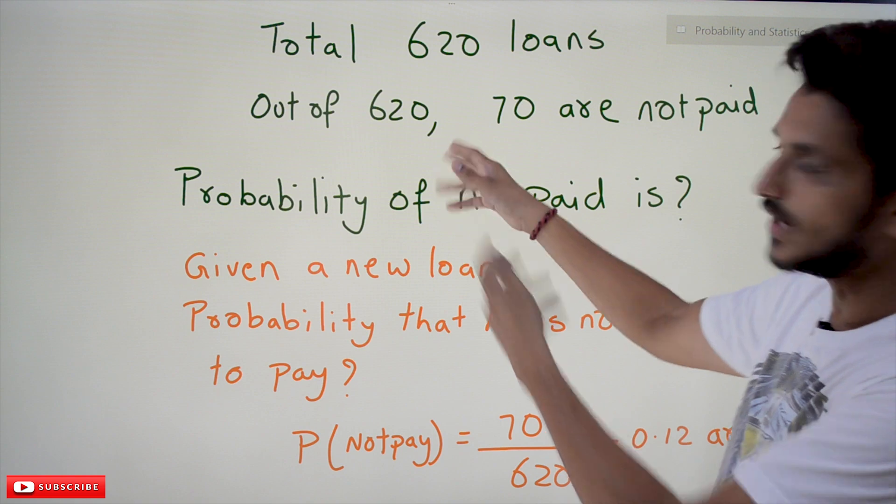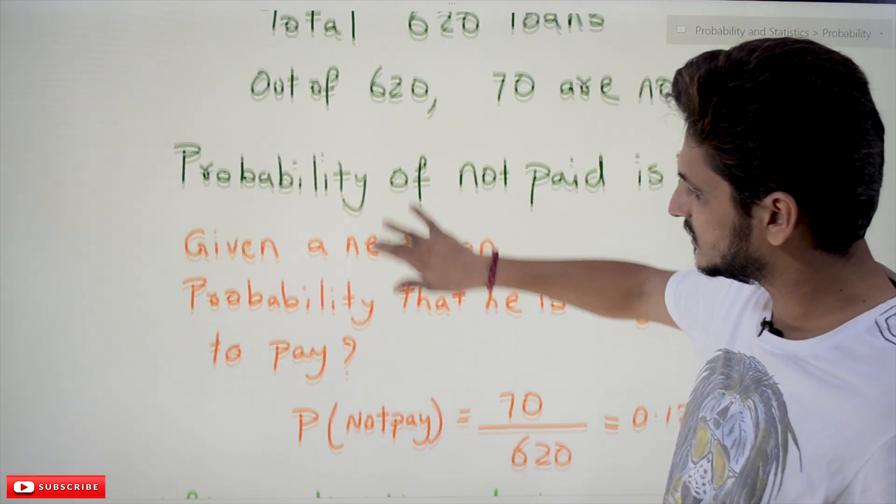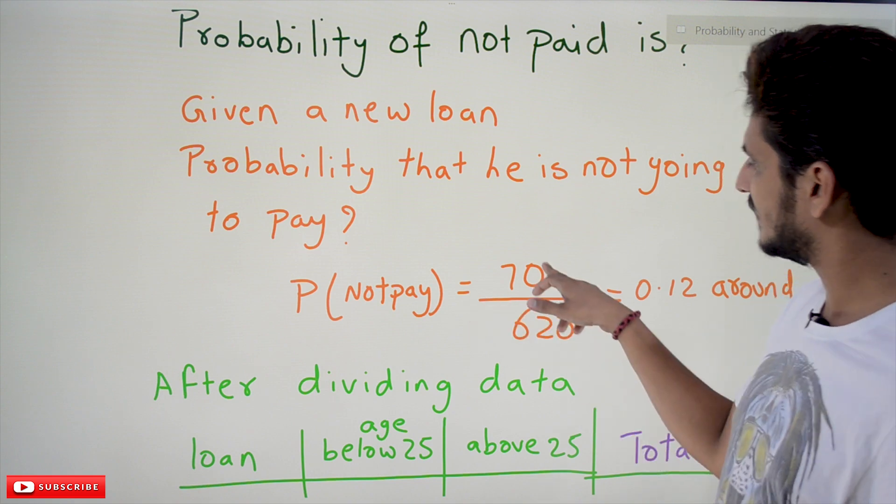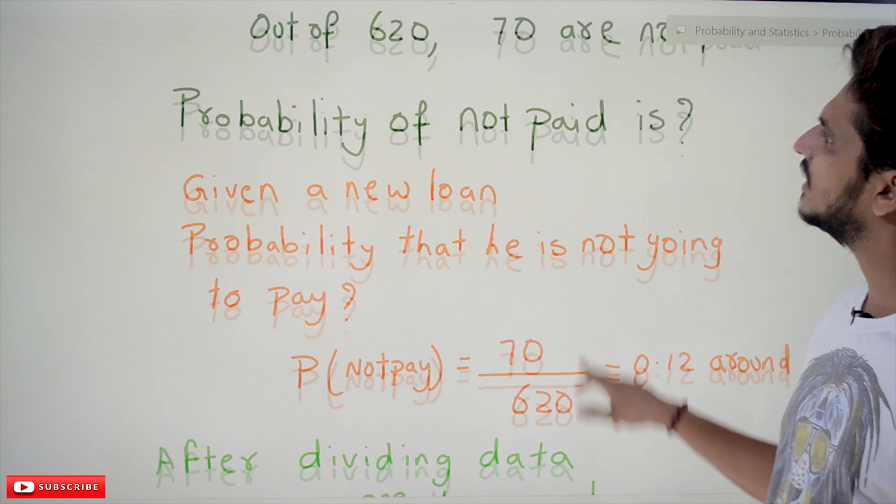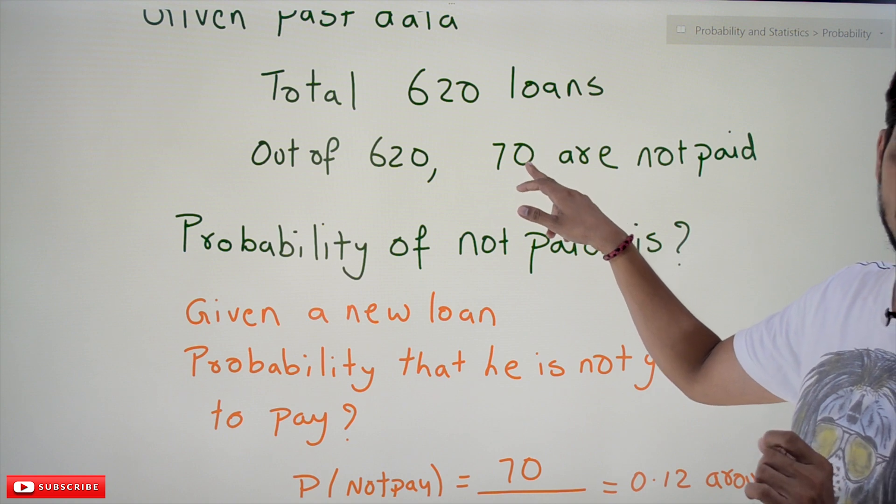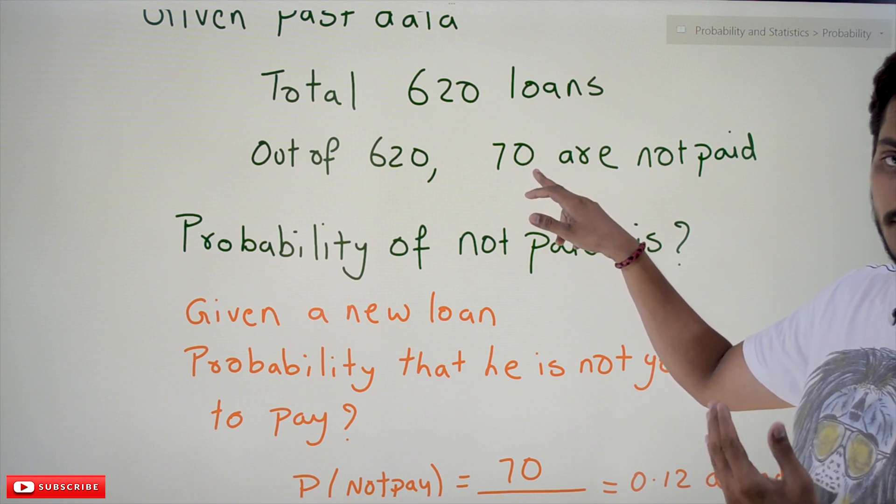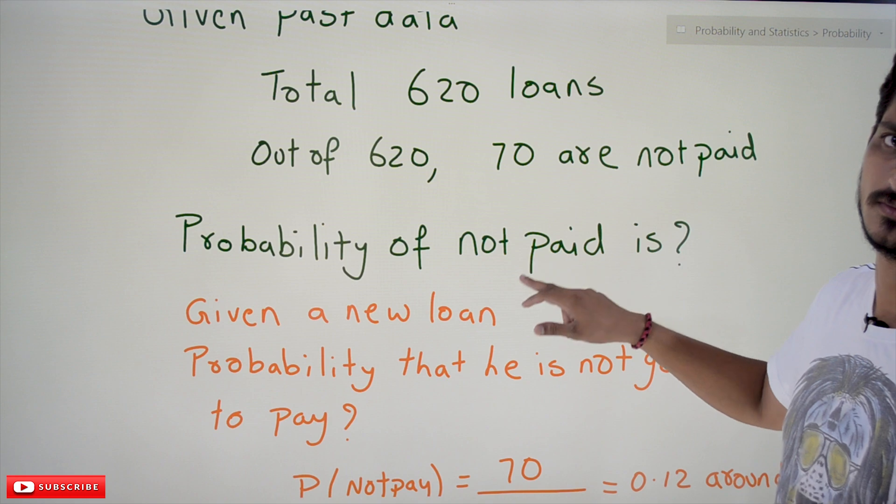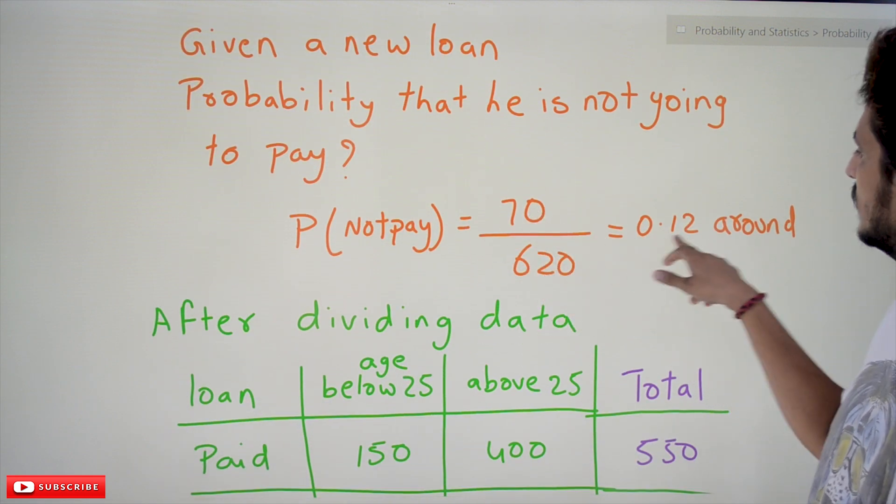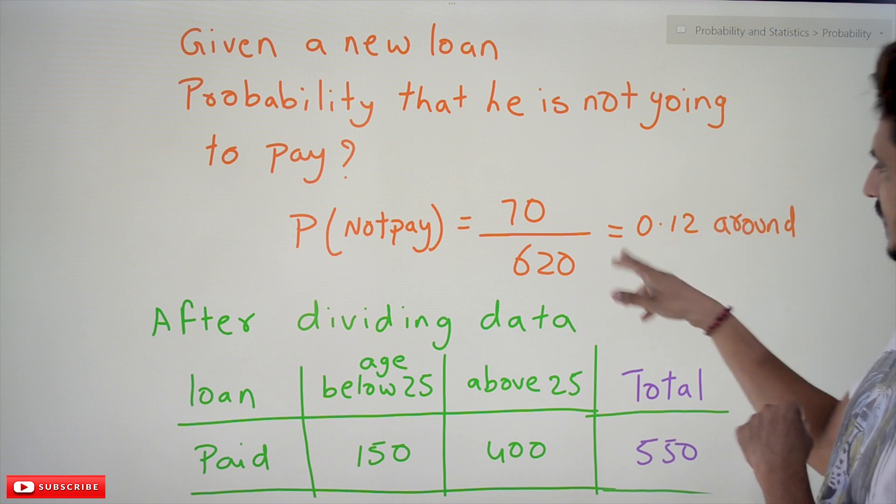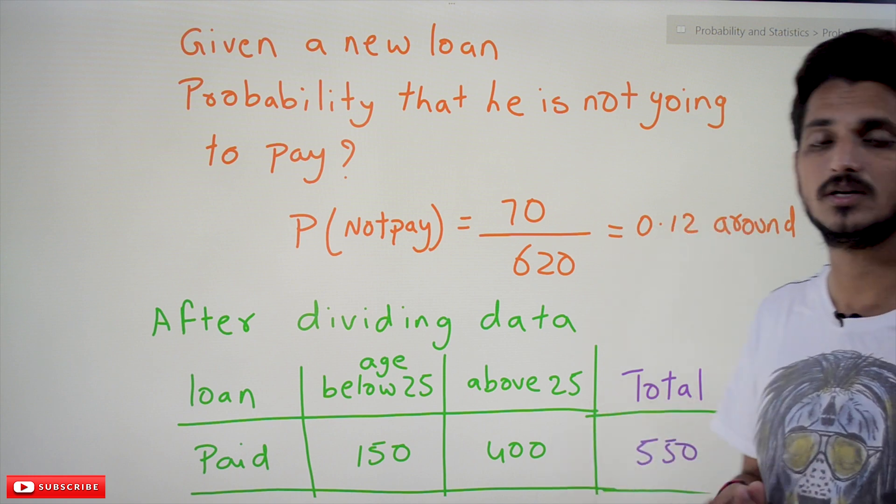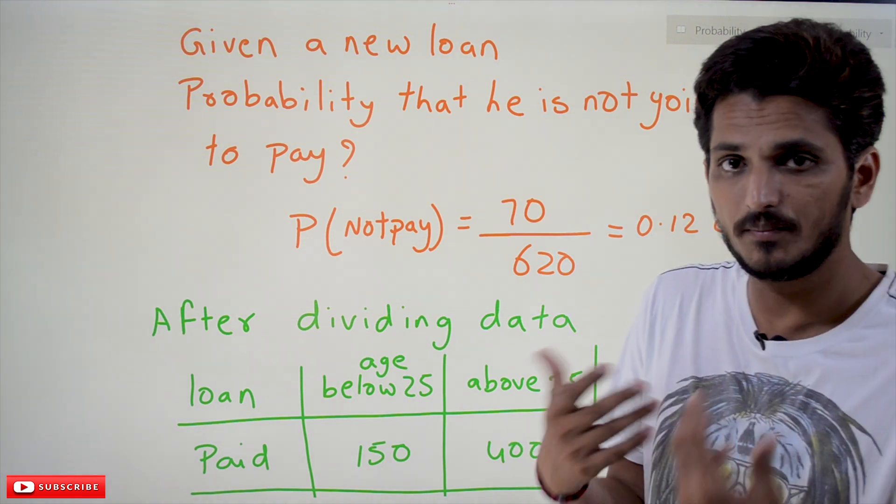From the past data, what we understand - it says that the probability that he is not going to pay is 70 out of 620, because out of 620, 70 are not paid. This is the data which we got from the previous years. So from that, it says that 70 out of 620, that is equal to 0.12 around - we have not mentioned the value exactly - around 0.12, means 12% are not going to pay the bank loans.